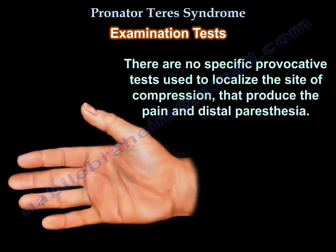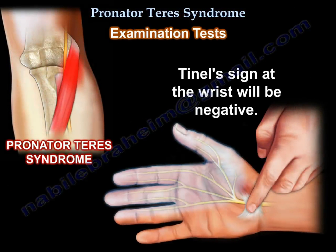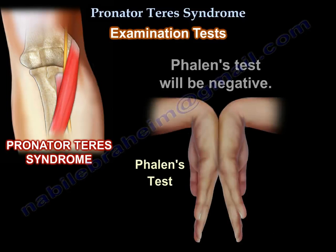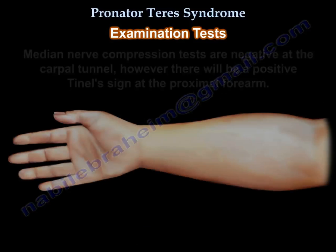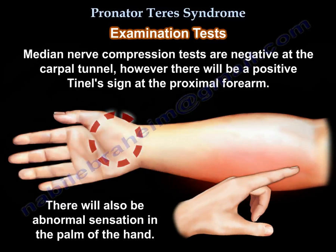There are no specific provocative tests used to localize the site of compression that produce pain and dysparesthesia in pronator teres syndrome. In pronator syndrome, Tinel's sign at the wrist will be negative, and Phalen's test will be negative. Median nerve compression tests are negative at the carpal tunnel; however, there will be a positive Tinel's sign at the proximal forearm, and abnormal sensation in the palm of the hand.